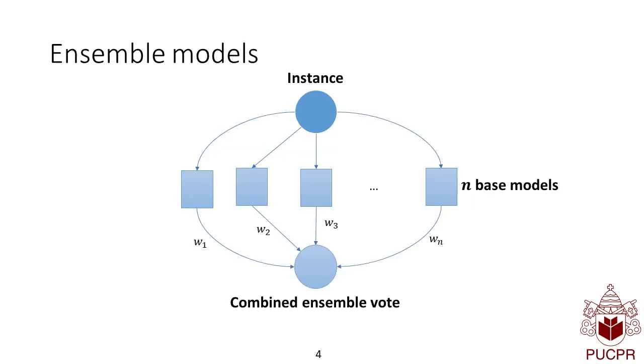The current state-of-the-art models are based on ensembles. That means that when an instance arrives, you request your N base models classify this instance, and then you combine the vote of these base models, and then you have a strong learner.